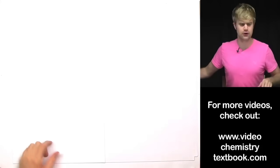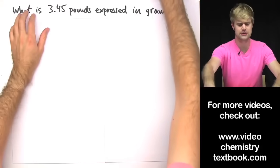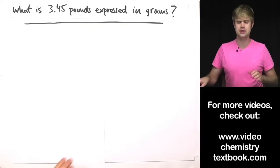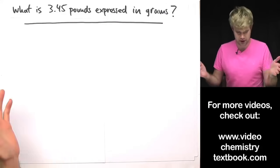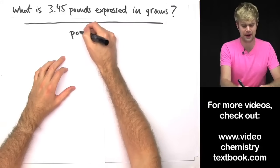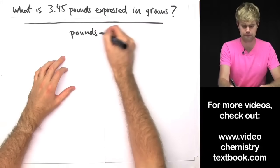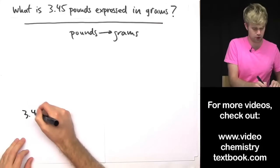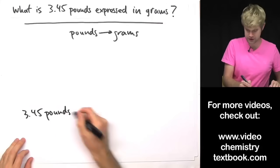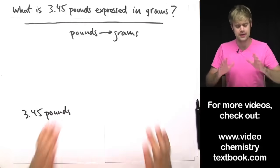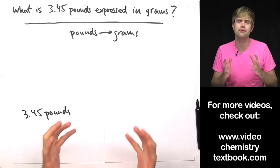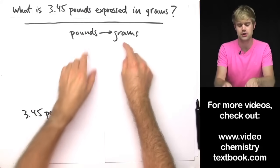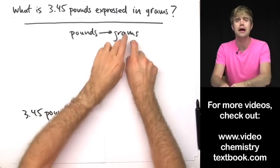So here is our first one. We want to know what is 3.45 pounds expressed in grams. The conversion that we're going to be doing is pounds to grams, and we're going to be starting with 3.45 pounds. The next thing we've got to do is find some kind of relationship between pounds and grams.